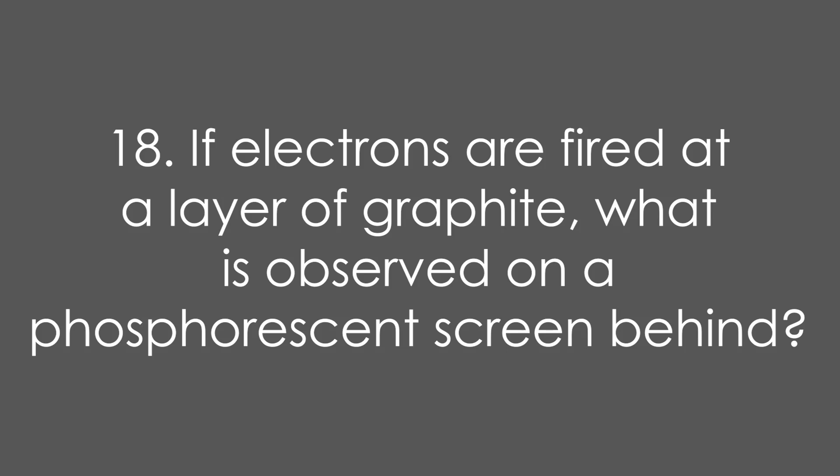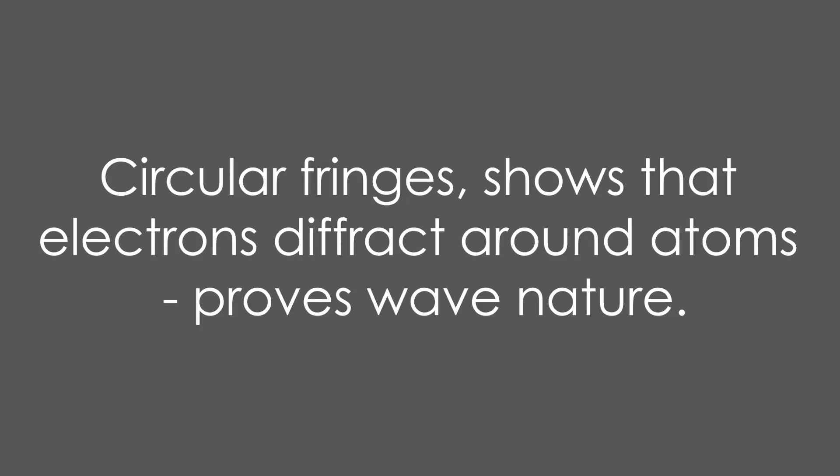Eighteen, if electrons are fired at a layer of graphite, what is observed on a phosphorescent screen behind? We see circular fringes. This shows that electrons are diffracting around the atoms. This proves the wave nature of electrons.